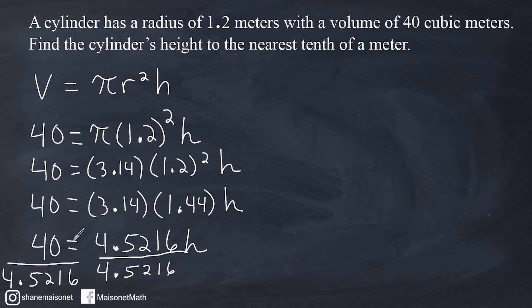If I take 40 and divide it by 4.5216, we end up getting a value of 8.846 and a bunch of other digits, which is unnecessary to write because we just need to round to the nearest tenth of a meter. The question is, is our answer going to be rounded to 8.8 or 8.9? Looking next door, 4 is not large enough to round this up to a 9. So we would say that the height of our cylinder is approximately equal to 8.8 meters in length.